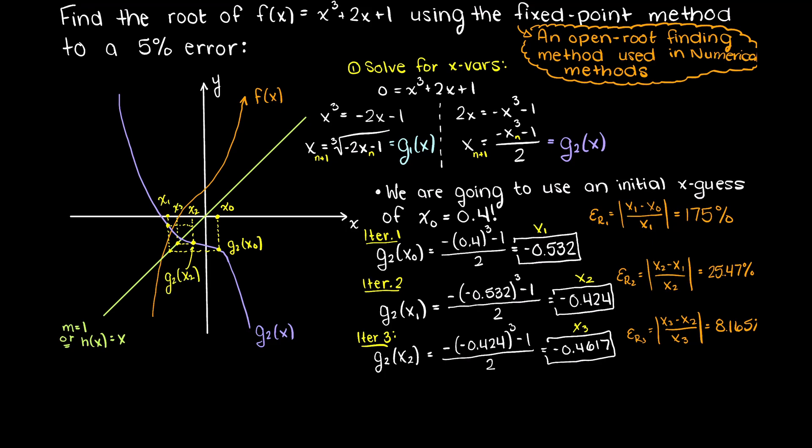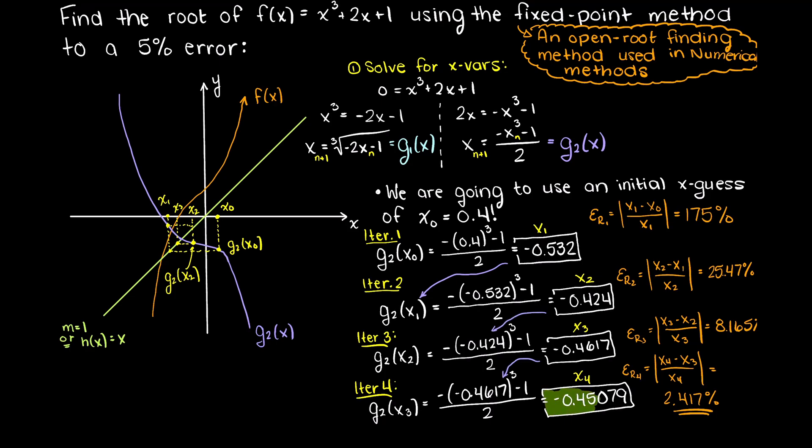So again let's just plug in our x3 value into our g2 function and we see that x4 is going to equal minus 0.45079. When solving for the percent error, we see that we get 2.417%, which is below our 5% required threshold. Therefore, we can say that the root of this function is located at minus 0.45079 with a 2.417% error.